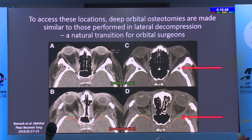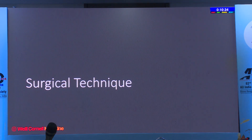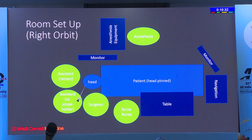To remove bone from these locations to access pathology on the other side is really standard stuff we're doing in all of our thyroid decompression surgeries. The addition of the endoscope really allows you to very easily and safely do this.